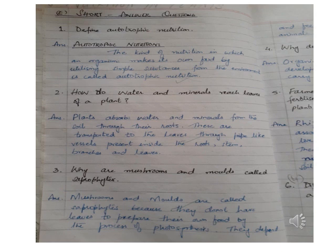Copy down question number two: How do water and minerals reach the leaves of a plant? Write down the answer. Plants absorb water and minerals (M-I-N-E-R-A-L-S) from the soil through their roots.